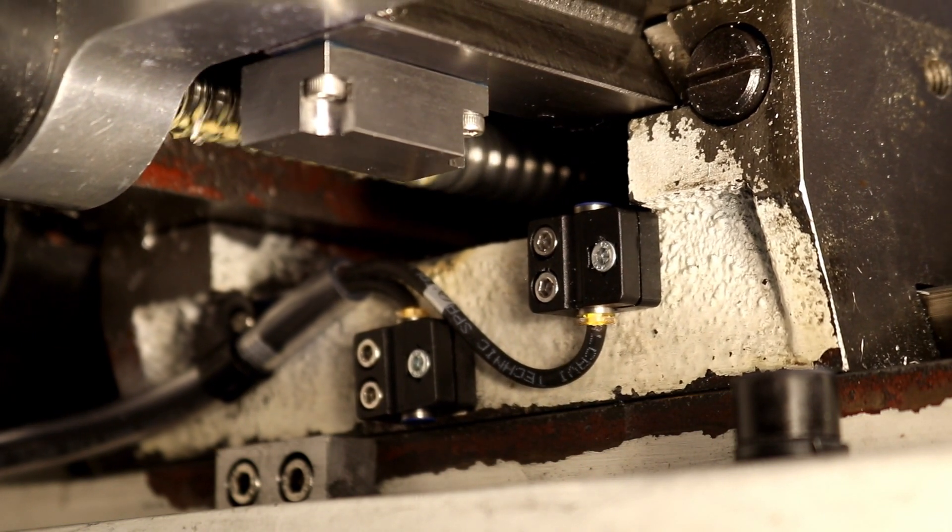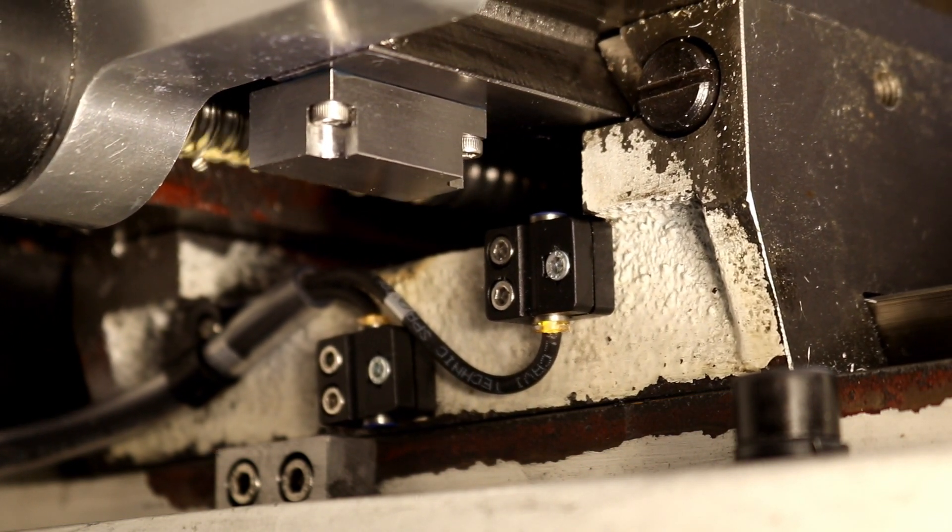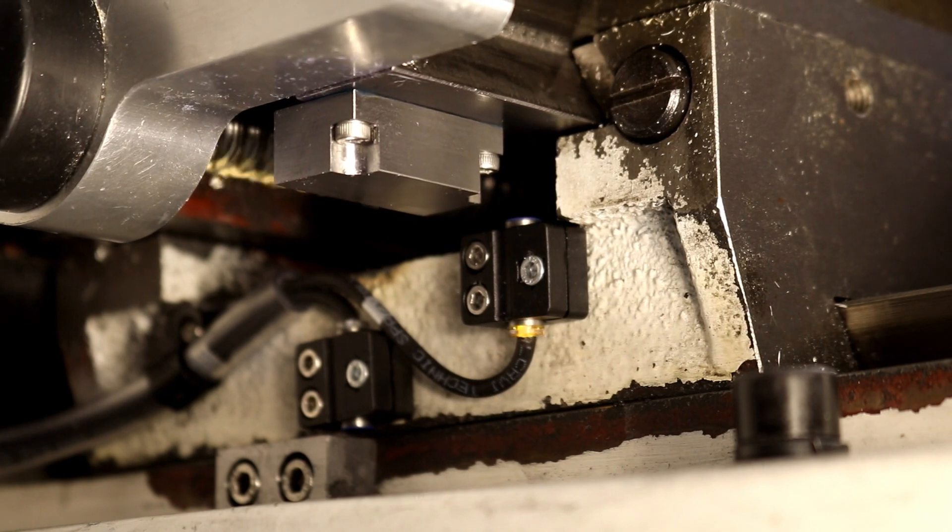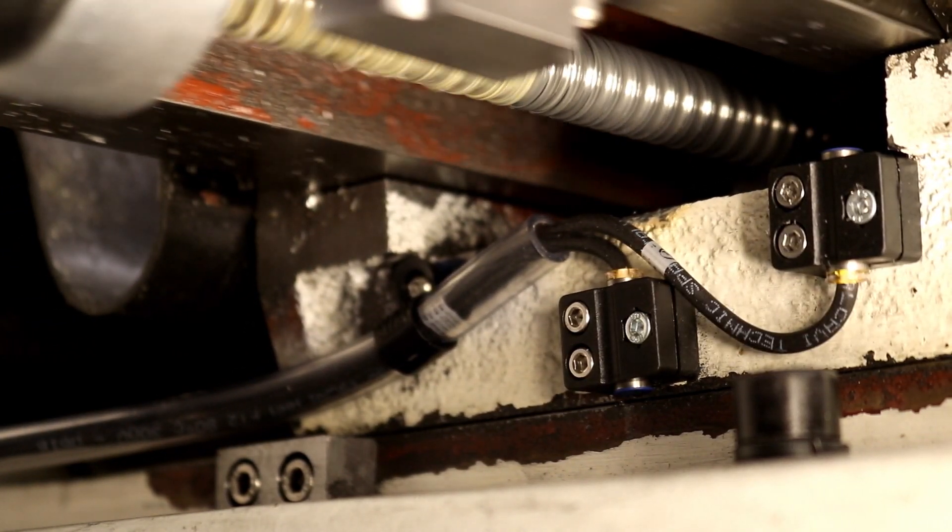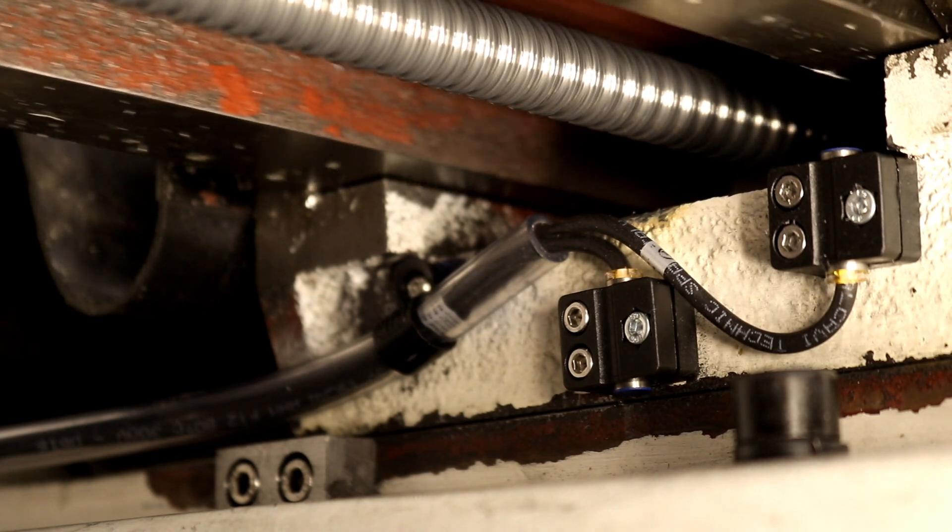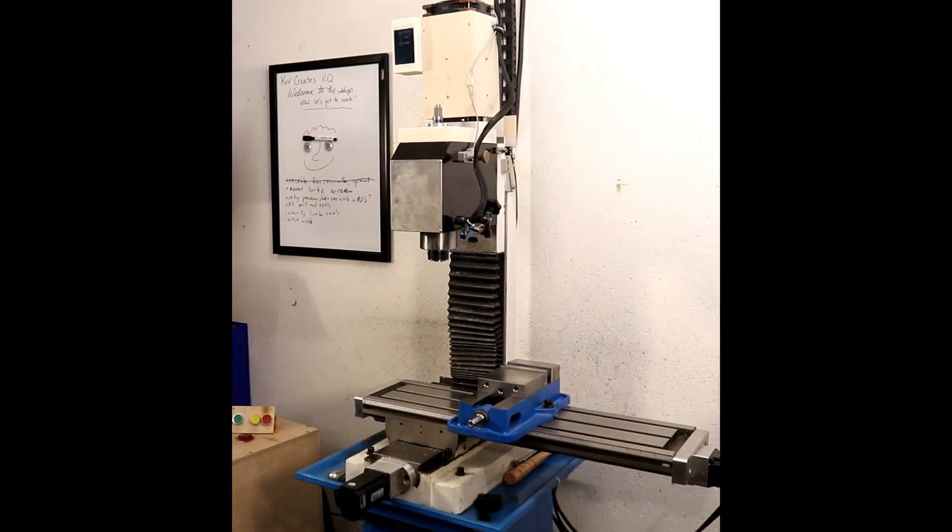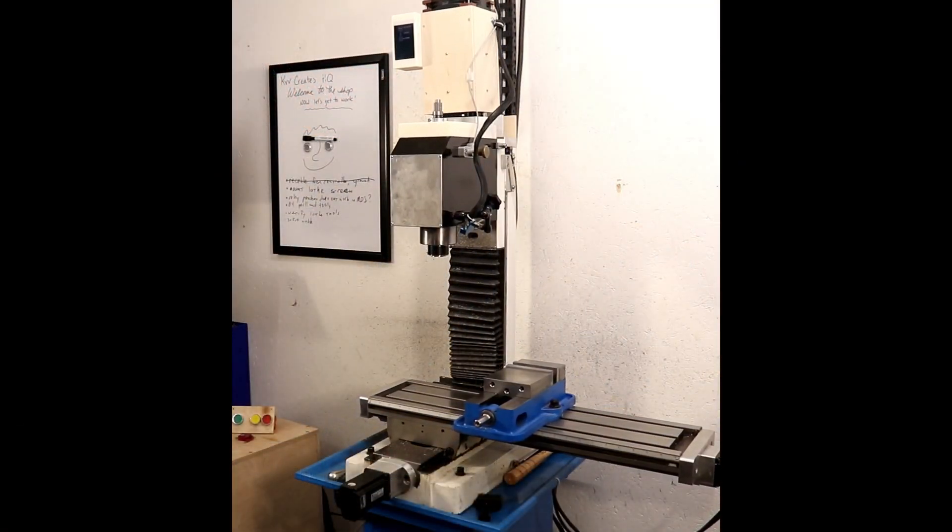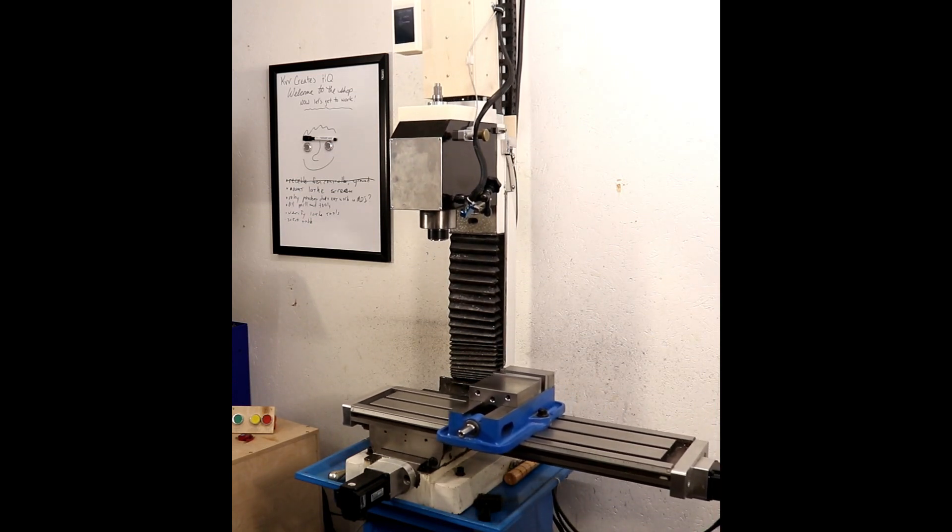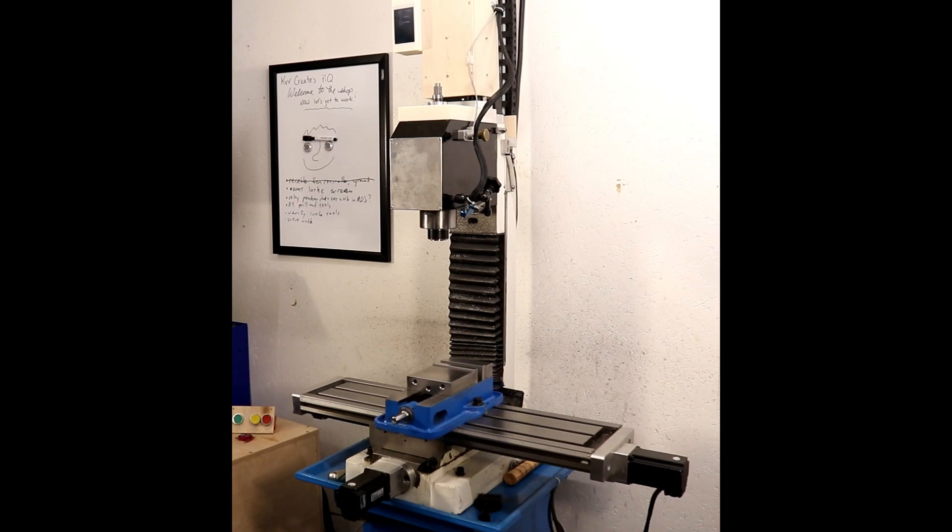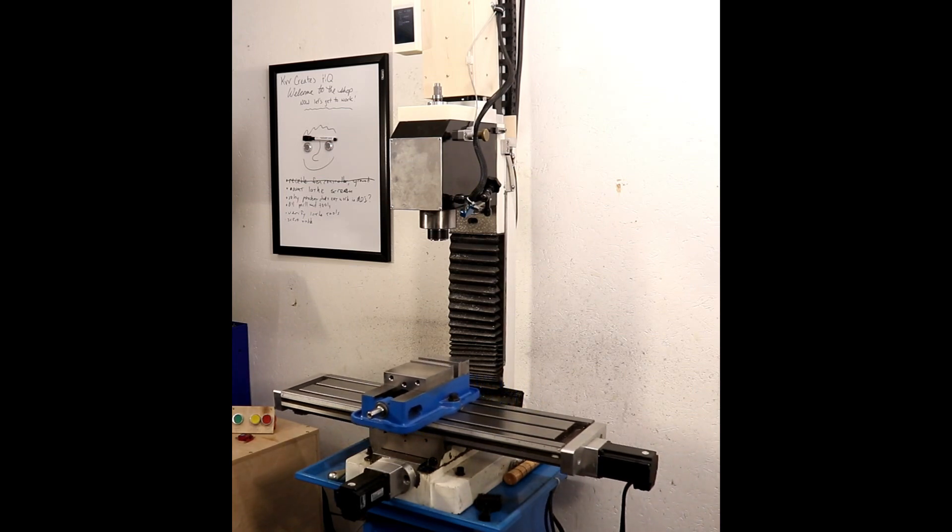After the x and y axes are homed, their origin is in the center of their travel, and that way their limits are symmetric. That seemed convenient to me, but you might prefer to have the origin be at the extreme end of the travels of the axes, and that's what I do for the z-axis. Z0 is at the extreme upper limit of the z-axis. Again, it seemed convenient to me.